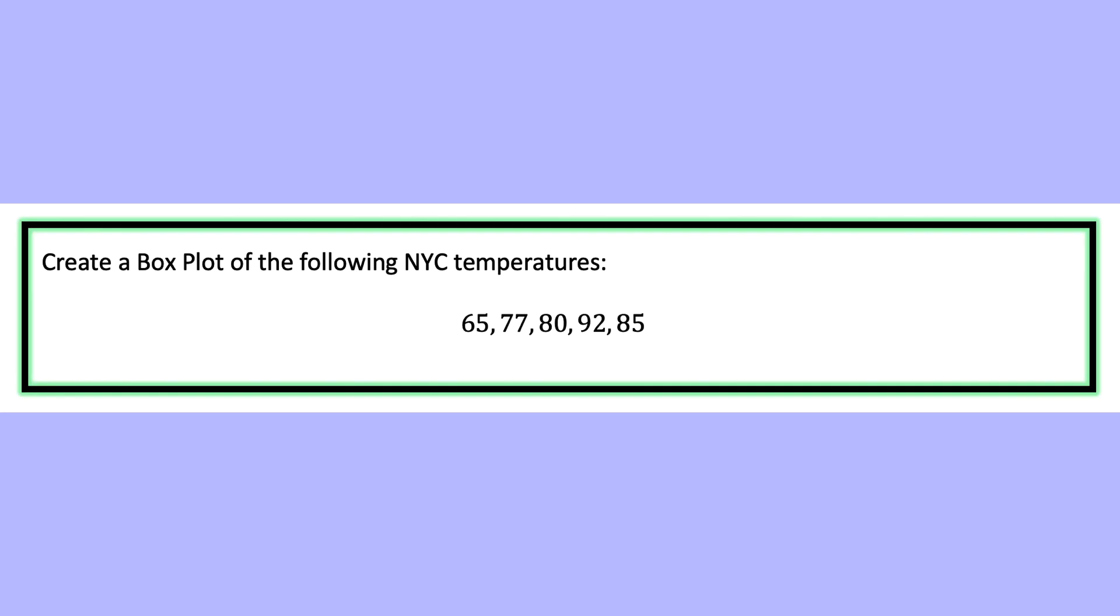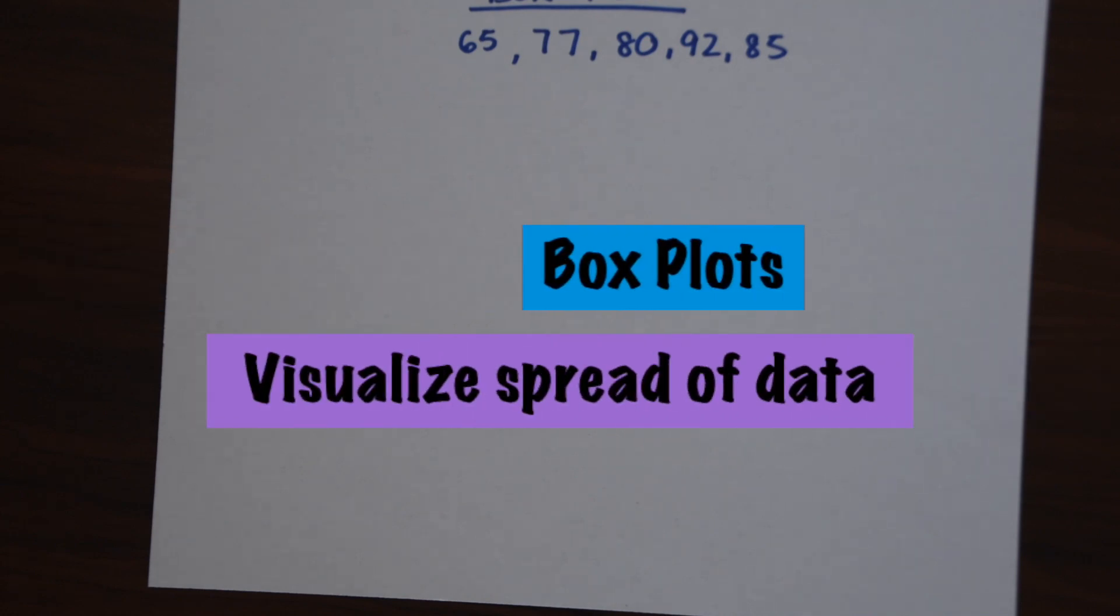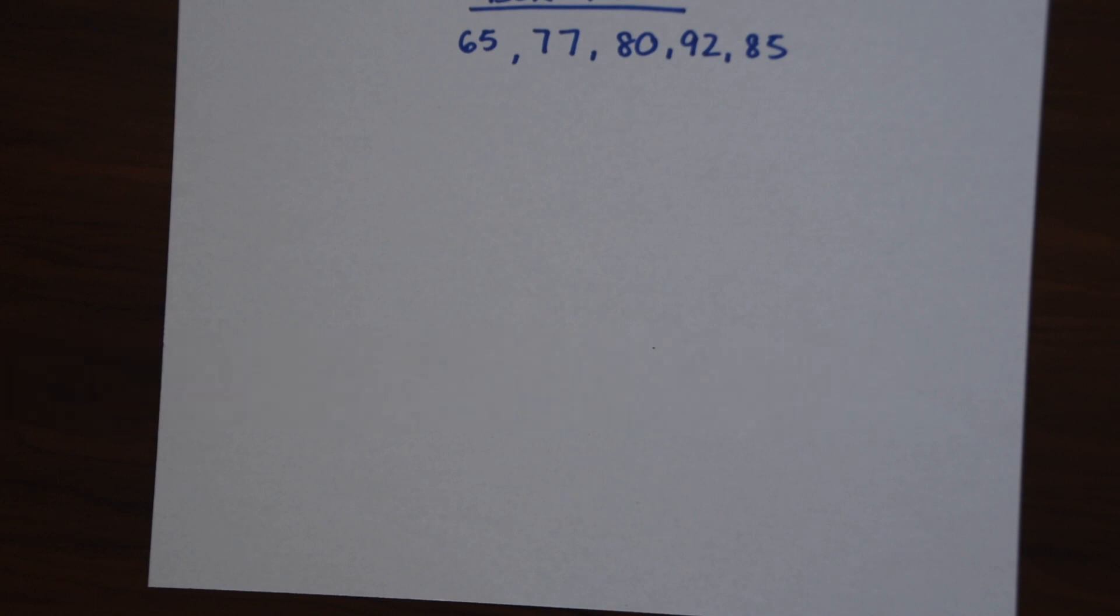So let's look at our question. We need to make a box plot of the following New York City temperatures found within a day. So we have these five numbers and we need to make a box plot. These all represent temperatures. So the first thing we're going to do is put the numbers in order because we're going to be finding the median.